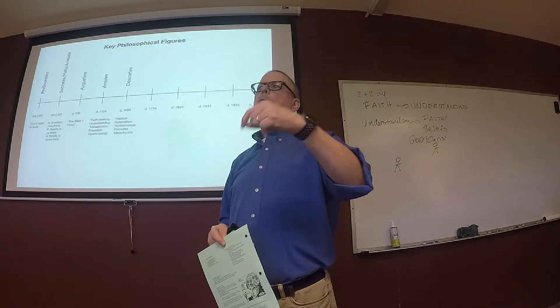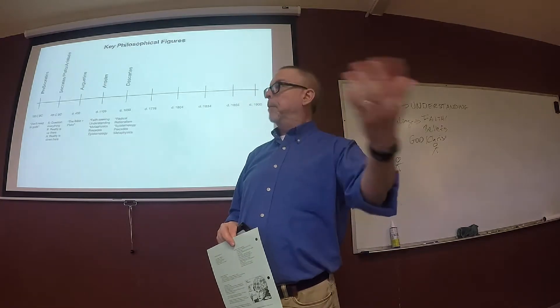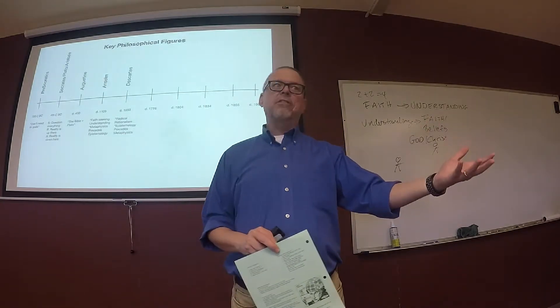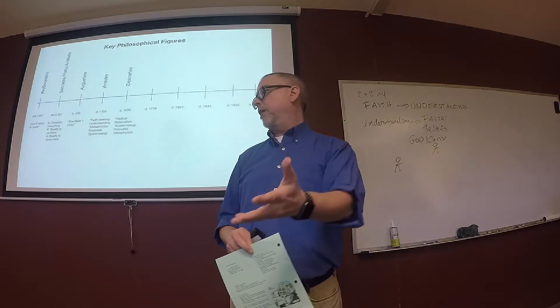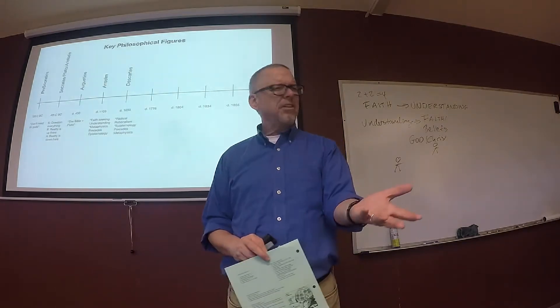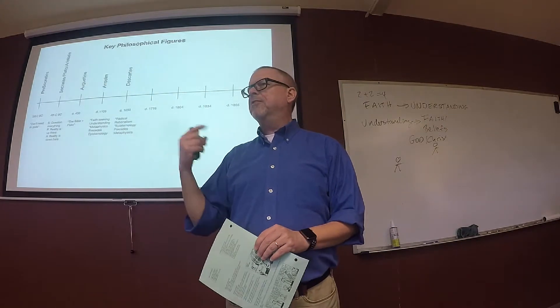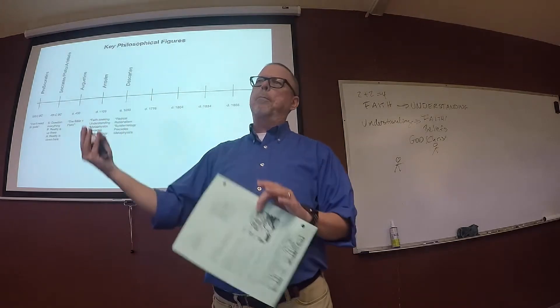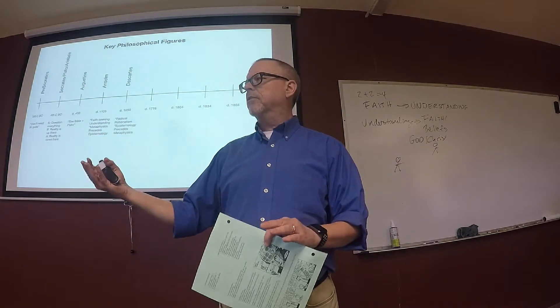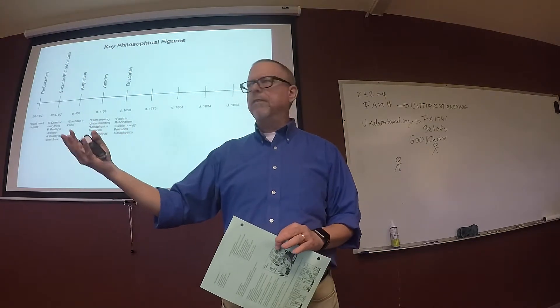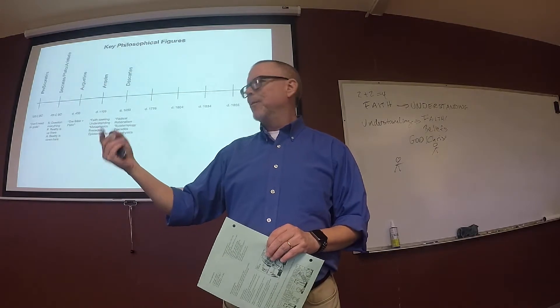So there has to be something that's better than everything else. And he's going to say one of the properties of the best thing is that it exists. Because something that exists is better than something that doesn't exist. Does that make sense? So he's going to say since God is that thing which is the best, God must exist. And that's his proof. Is that convincing to you? For most people, it's not.